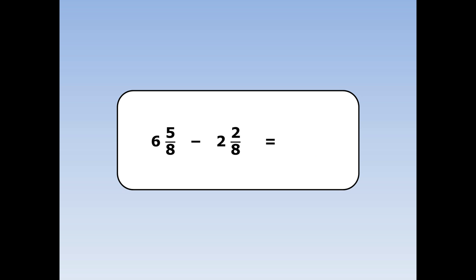6 and 5 eighths take away 2 and 2 eighths. First we take away the whole numbers: 6 take away 2 is 4. Next we take away the fractions: 5 take away 2 is 3 and the eighth stays the same.